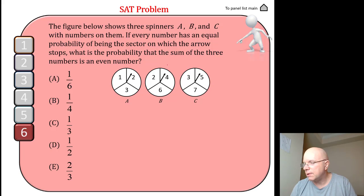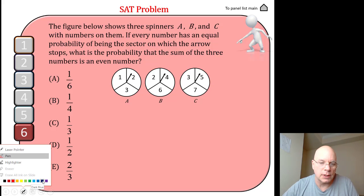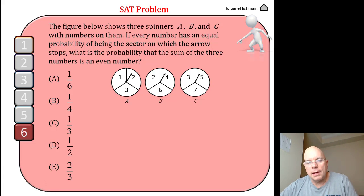But understanding parity is going to be so much easier. Parity means the evenness or oddness of numbers, and so there's a clever approach to this one. If you inspect the spinners and notice that B must always land on an even number and C must always land on an odd number.